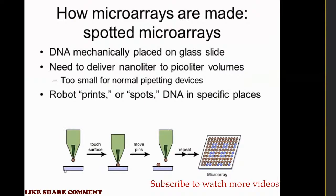In the spotted method, there is a board with complementary DNA, and in the tip of a pen they have the DNA probe. If there is complementary DNA, it makes the interaction and produces a color result; otherwise, it won't interact.